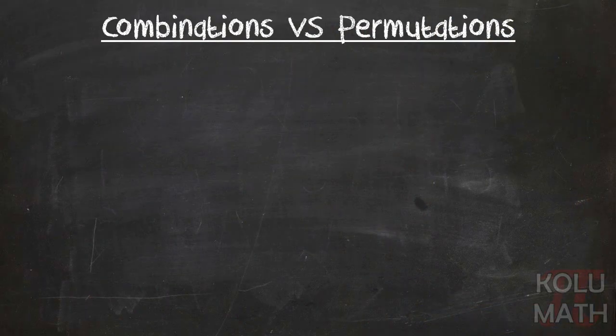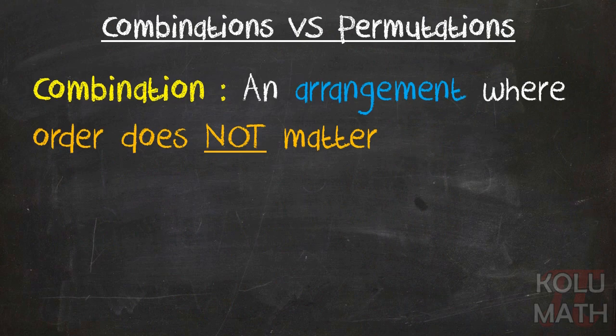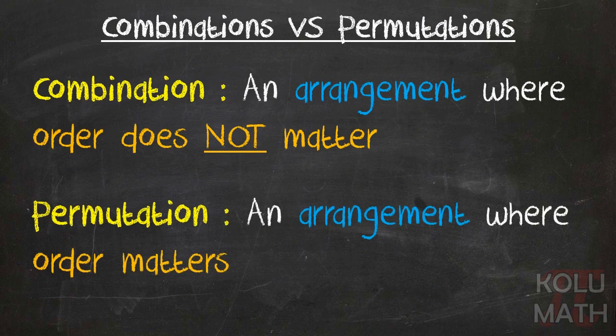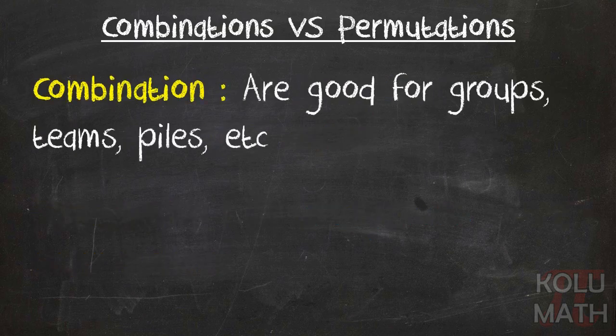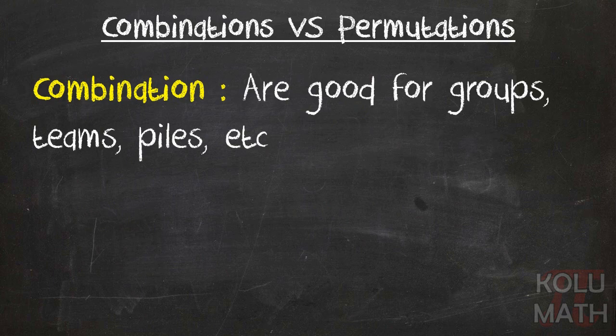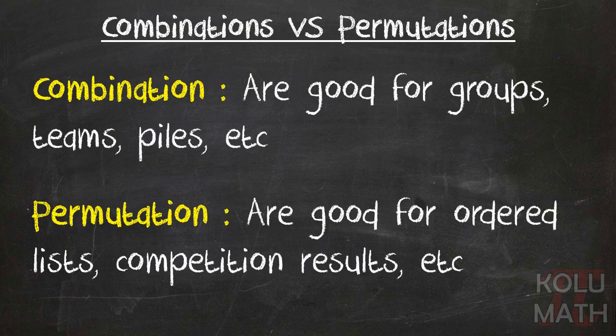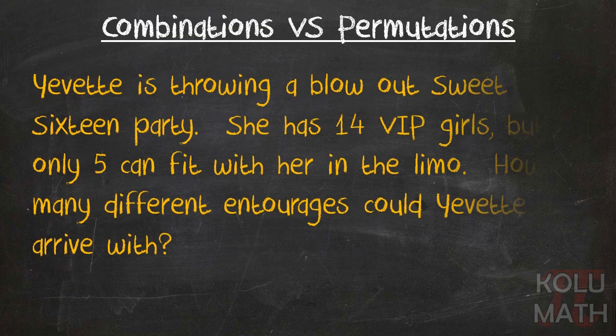So combinations versus permutations. Remember that a combination is an arrangement where order does not matter, and a permutation is an arrangement where order does matter. Combinations are good for groups, teams, piles, anything that doesn't matter what order they're placed into those groups. And a permutation, they're good for ordered lists or competition results, where it matters what order you're selected in. First place is better than third place. If that's the case, you've got a permutation.